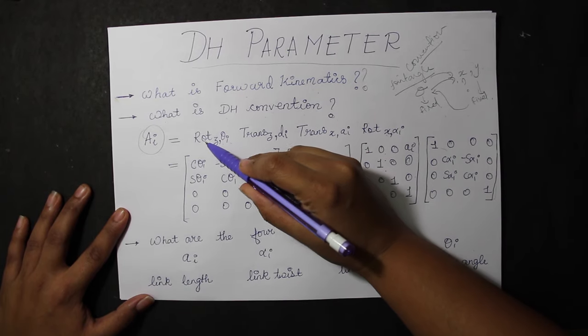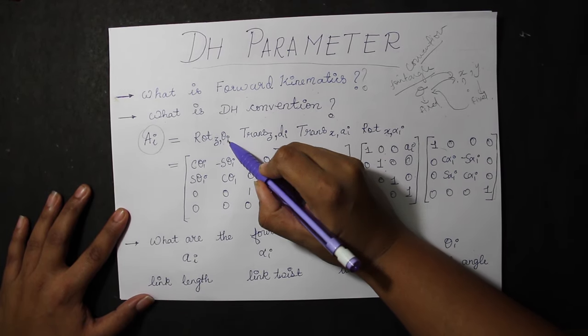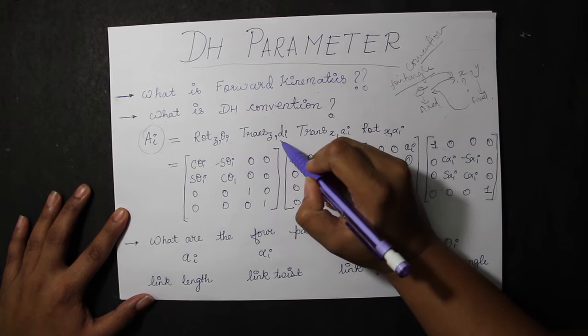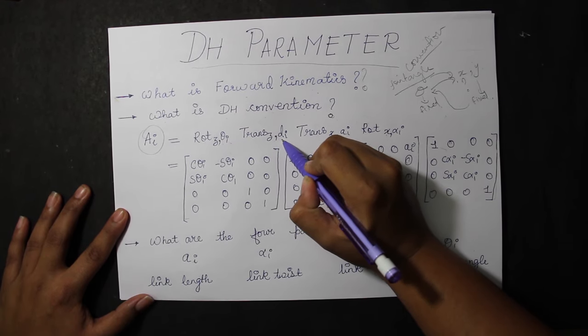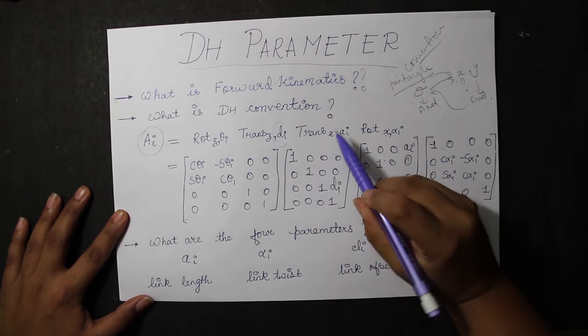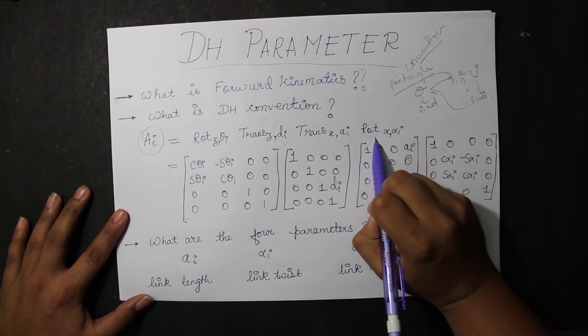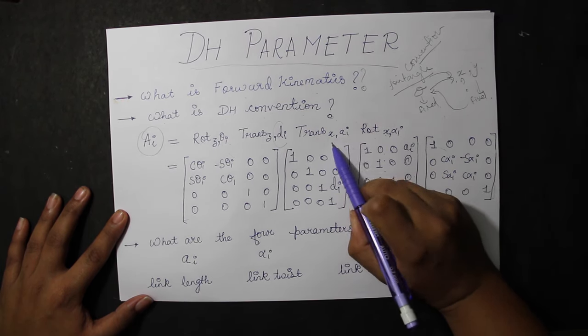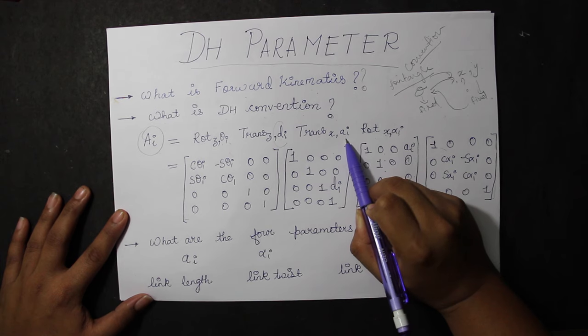That is, rotation at an angle of theta with respect to Z, then translation along Z for a value of DI. And similarly, rotation of X for an angle of alpha and translation of X for a value of AI.